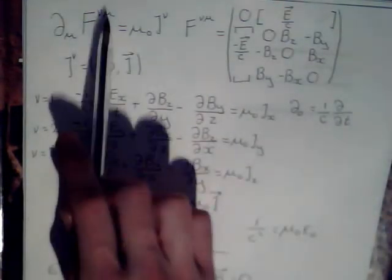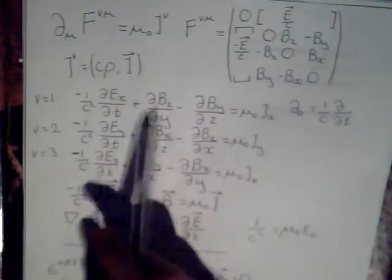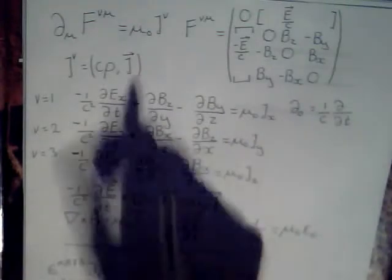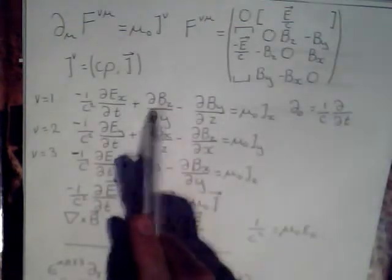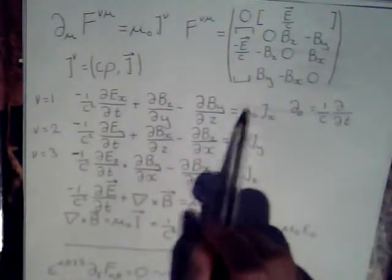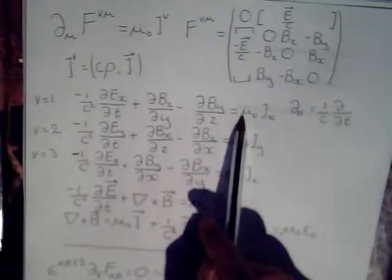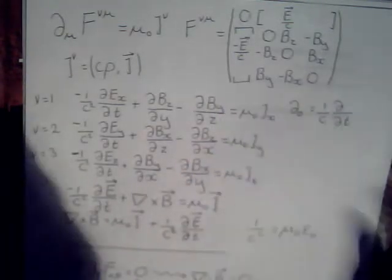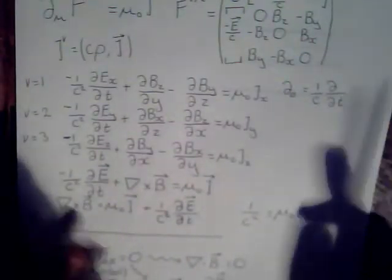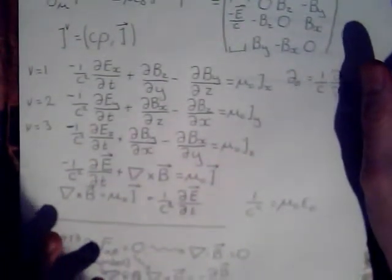Now going on to mu equals one, we get the partial of zero with respect to X, which is just zero. I haven't included that. Then we go on to partial of BZ with respect to Y minus the partial of BY with respect to Z equals permeability of free space. Actually, this is the magnetic constant. Magnetic constant times current density, the X component of current density.